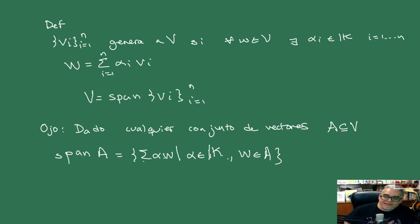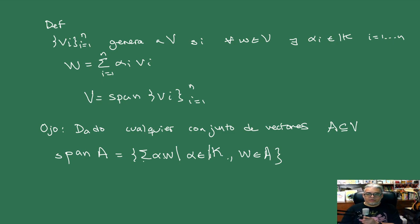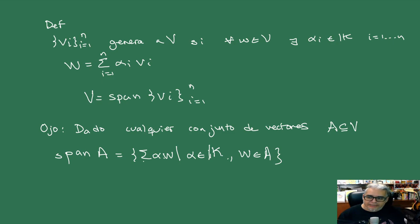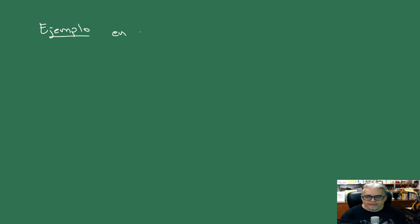Entonces, ¿qué le hace falta a nuestros generadores? ¿Qué le haría falta a los generadores para cumplir esa condición de unicidad que tienen las bases? Vamos a ver un ejemplo de base, pensando por ejemplo en R3.